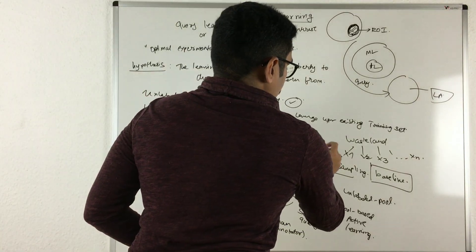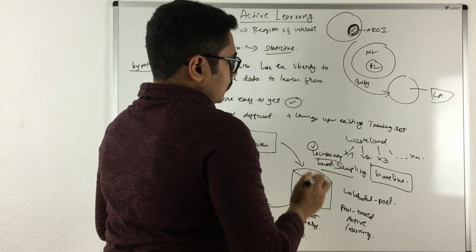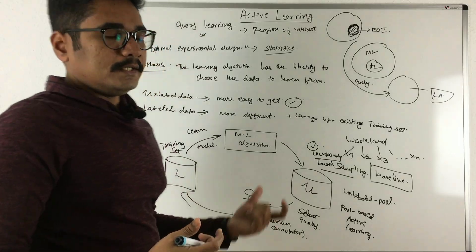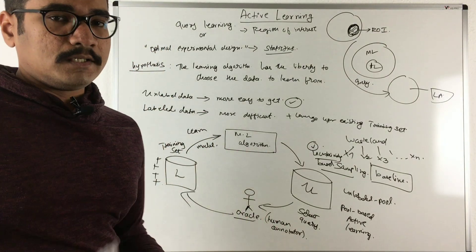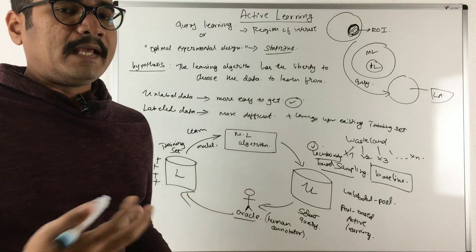So there this active learning comes into picture, and you can see how important it is to have a query-based learning system in order to extract certain information than to do an exhaustive search.